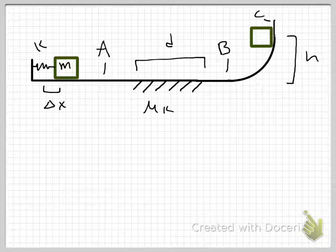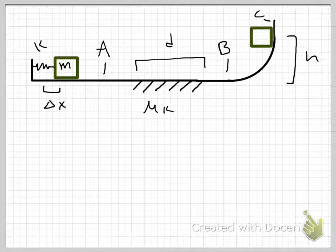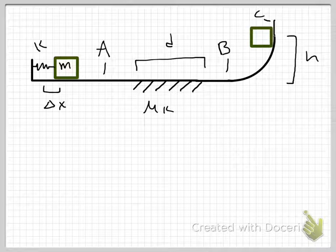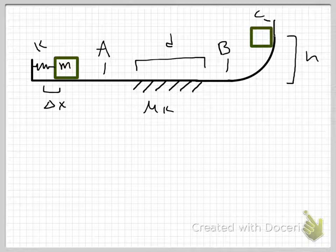The situation in this problem is this. I've got a crate of mass M that sits on a frictionless track. At the beginning of its motion, it is at rest, compressing a spring with spring constant k, compressed by some distance delta x. It's going to move on this frictionless track after it leaves the spring. It's going to cross over a section labeled distance d, which has a coefficient of kinetic friction mu sub k — a rough patch on the track. Everywhere else it's frictionless. Then it's going to move up a ramp to some height h, at which point it will have stopped.